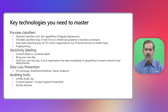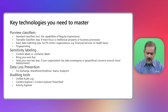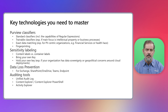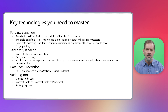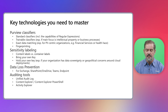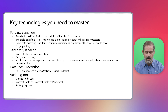You will also want to be familiar with data loss prevention. Depending on the organization, you want to dig specifically into DLP in Exchange, DLP in SharePoint, OneDrive, Teams, and Endpoint DLP — the different capabilities and how they all work together to ensure data cannot leak if it's identifiable via the classifiers previously discussed. You need to understand the dependencies, the limitations, and how they play with other technologies such as sensitivity labeling.